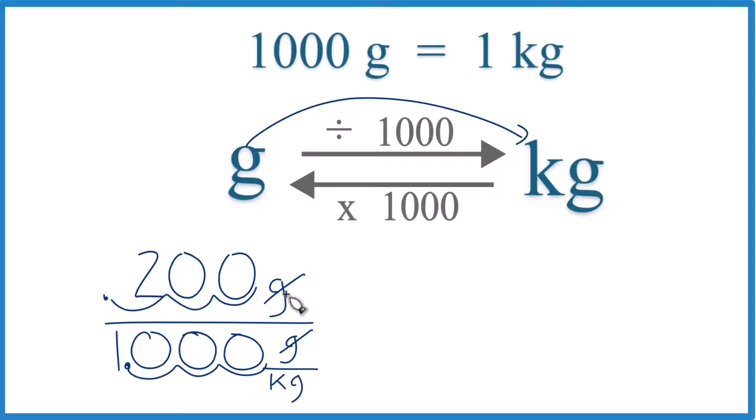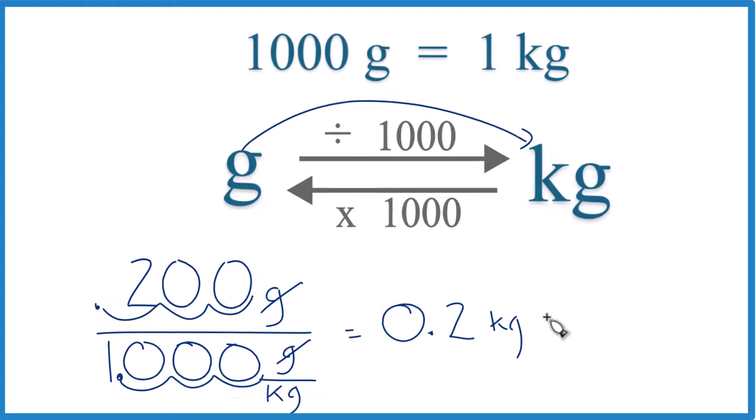So 200 grams is 0.2 kilograms. And you can write it like this. You don't really need to have these zeros over here. If your teacher wants you to multiply by a conversion factor, it's really the same thing, but let's give it a try.